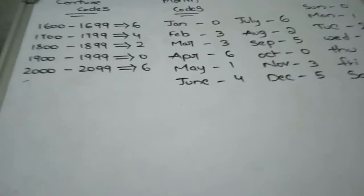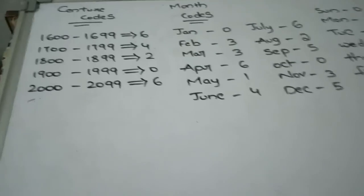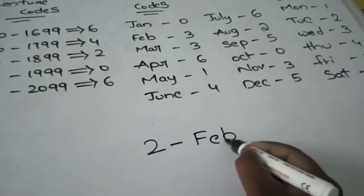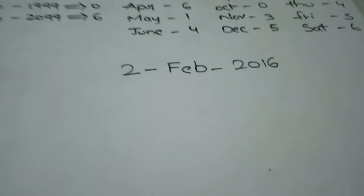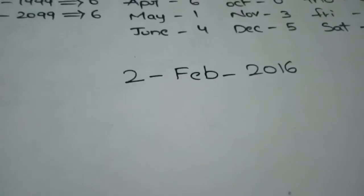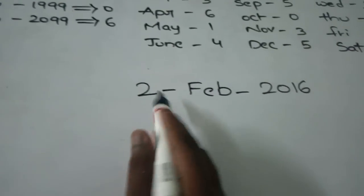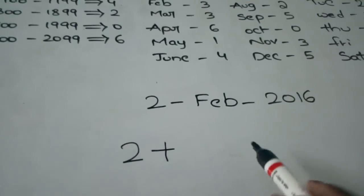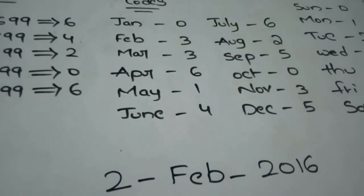Let's take a date: 2nd February 2016. What we have to do is take the day number — it's a shortcut method. Take the number 2 for the day, then for February go to the month codes and add 3.